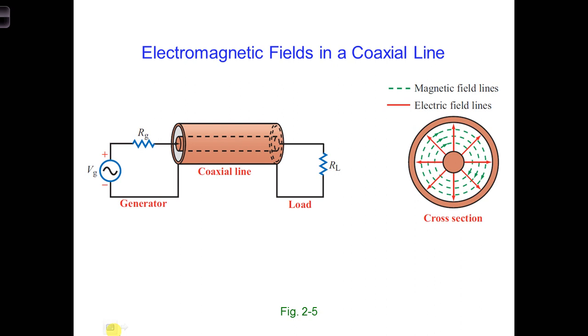We have the same thing for a coaxial cable, as shown here. For the cable oriented into the screen, as shown on the right, both the electric and magnetic fields are perpendicular to each other and also perpendicular to the direction of propagation into the screen.